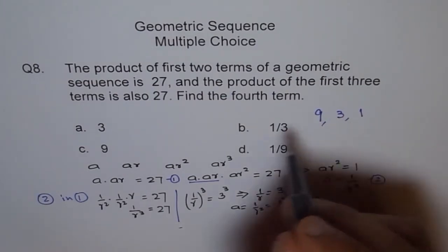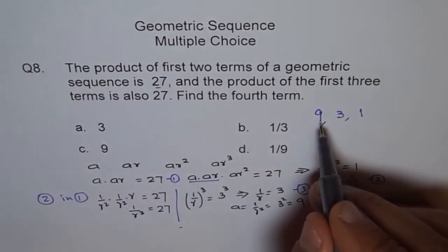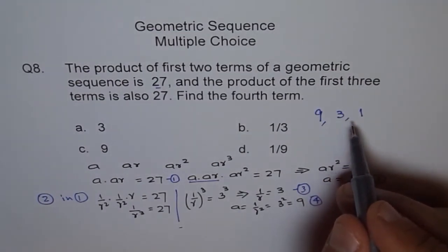If I multiply 9 and 3, I do get 27. If I multiply 9, 3, and 1, I also get 27. So it works.